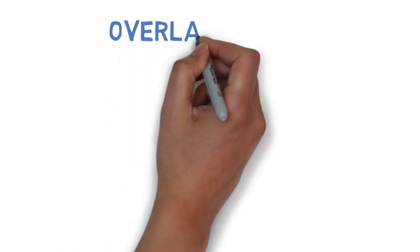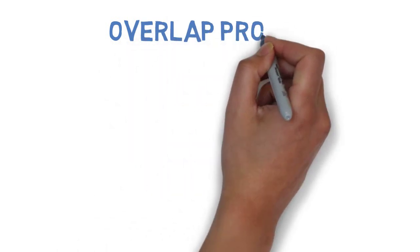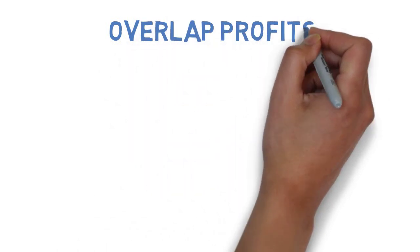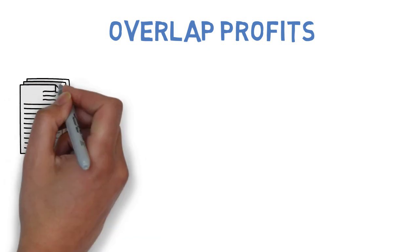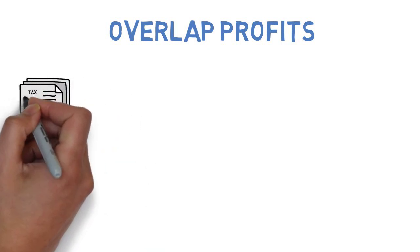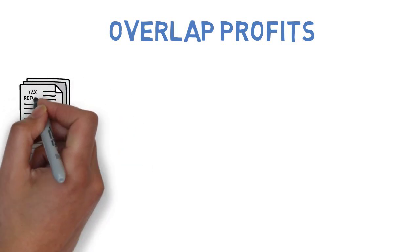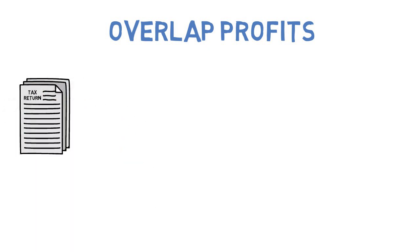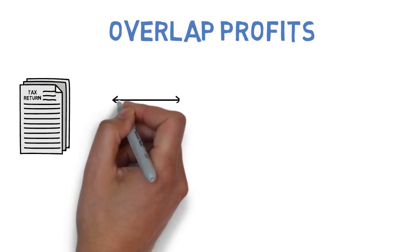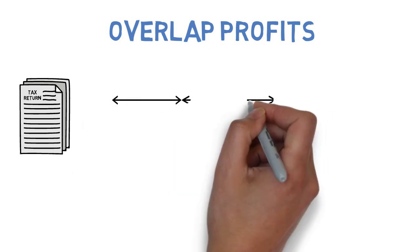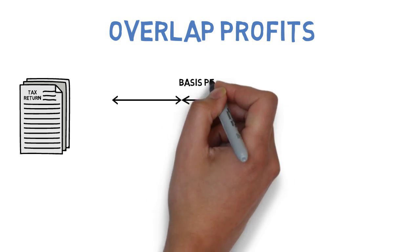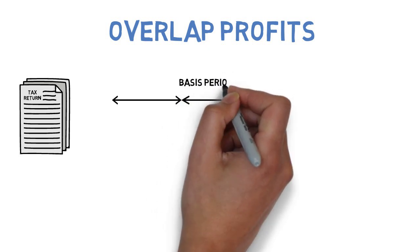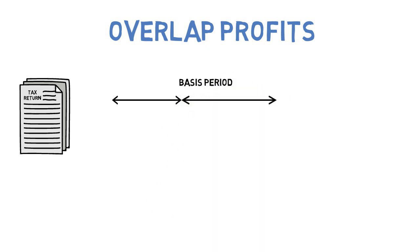This is probably a good time to mention overlap profits. When you complete your tax return, you'll normally report on 12 months of trading during a 12-month basis period, which will be the same as your accounting year. Your first basis period, however, is unlikely to be exactly 12 months in length.